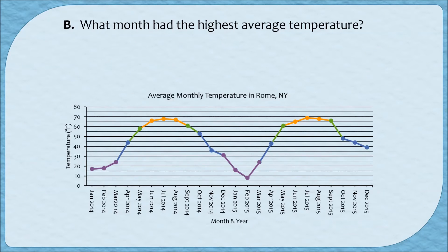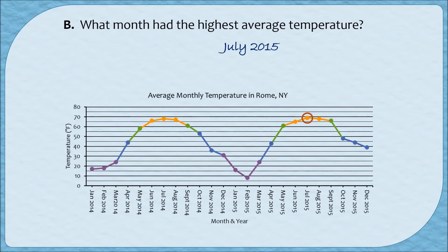What month had the highest average temperature? To answer this question we need to find the highest point in the graph. The two tallest points are pretty similar, but the highest point is achieved close to the right-hand side of the graph. Reading down from that point, I see it happened in July of 2015. Because this time series spans two years, it's important to also mention the year — July of 2015 and not July of 2014.